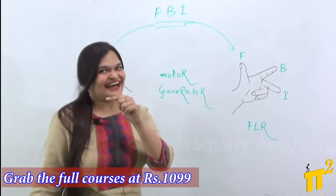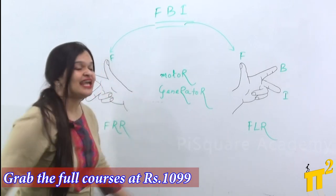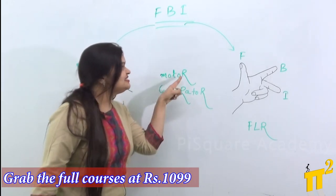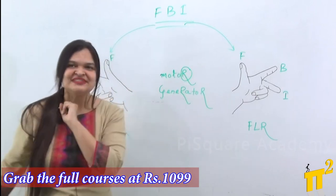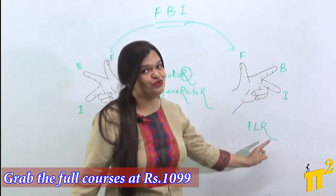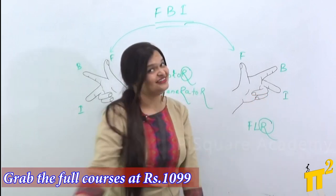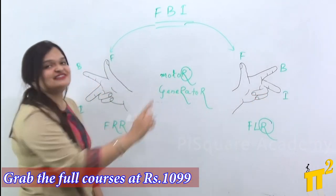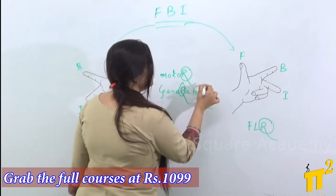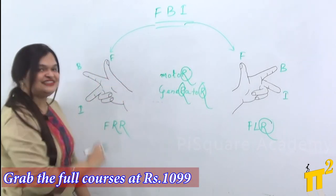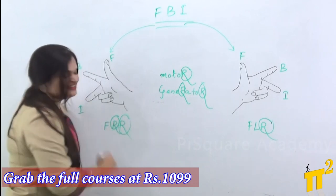The tip lies in the letter R. The word 'motor' contains a single letter R, and Fleming's Left Hand Rule also carries a single letter R. The word 'generator' carries two R's, and Fleming's Right Hand Rule also carries two R's.